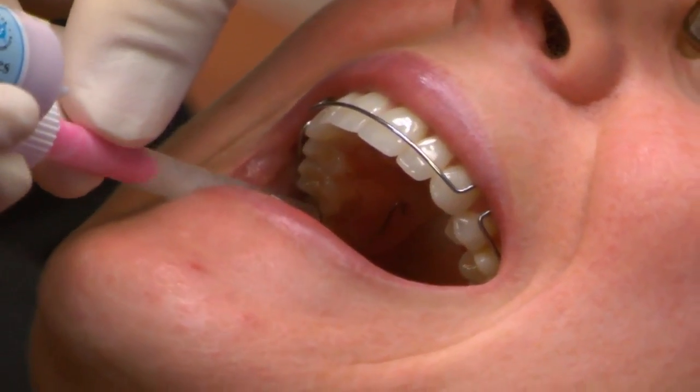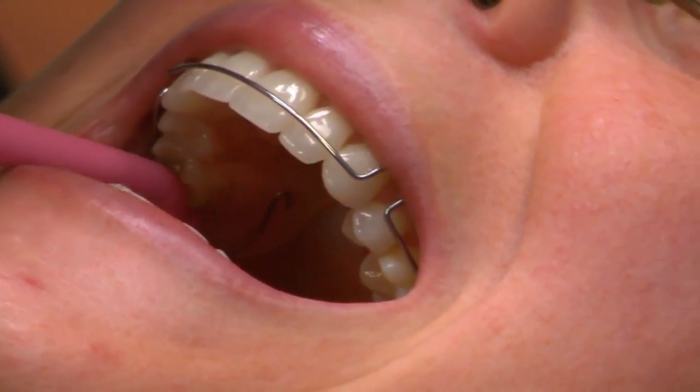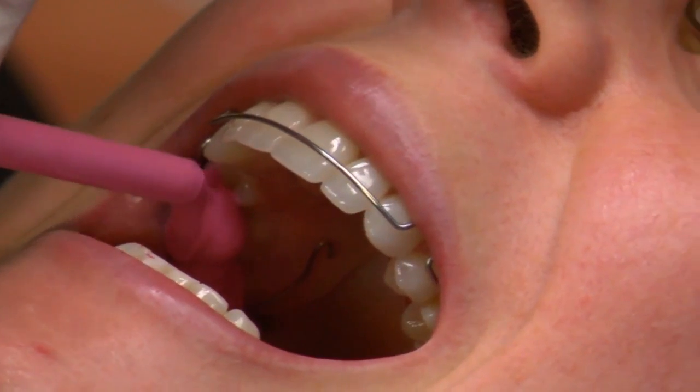That DVD basically covered leaf gauge. So now we have video about using a Kois deprogrammer to take the centric relation bite records. I have video for using Lucia jig for creating the centric relation bite records. And then I have a whole other section about how to create bite records for a full mouth rehabilitation case.